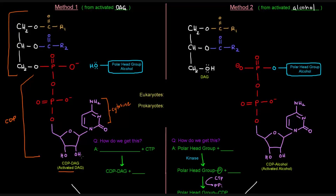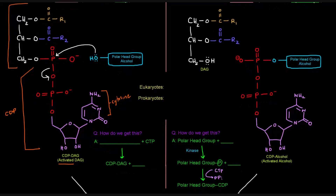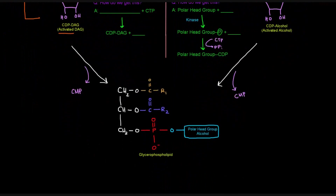So this polar head group alcohol here is going to join this activated diacylglycerol and nucleophilically attack at the phosphate portion, kicking off electron pairs onto the oxygen. A CMP then leaves, and the alcohol portion will be connected to the phosphate, leaving us with a glycerophospholipid where the diacylglycerol and the phosphates are connected to the polar head group alcohol.